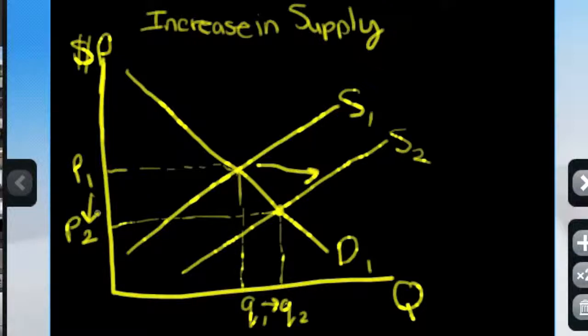So if, for example, there was a decrease in supply, then essentially it would just be the opposite. Let me just change my color.